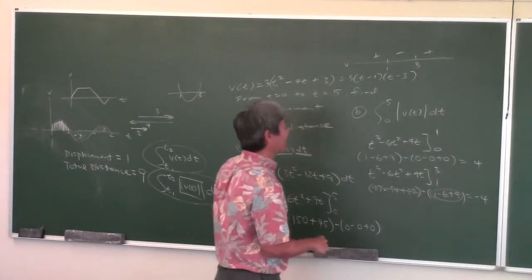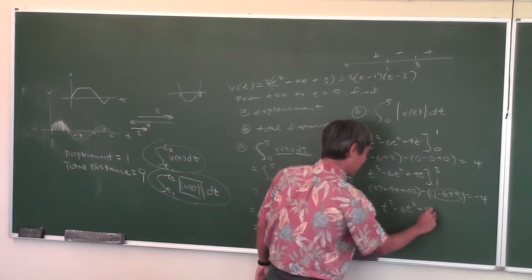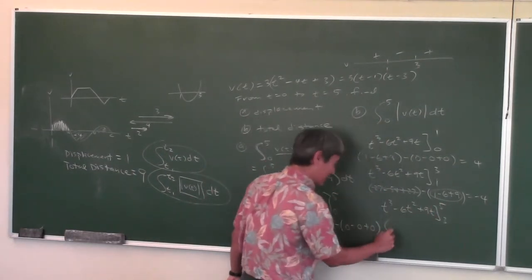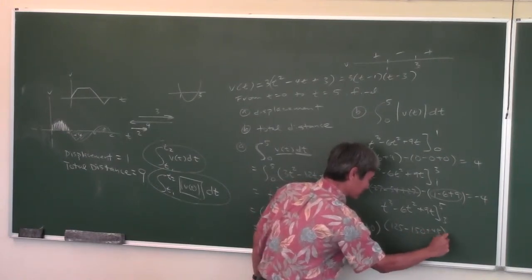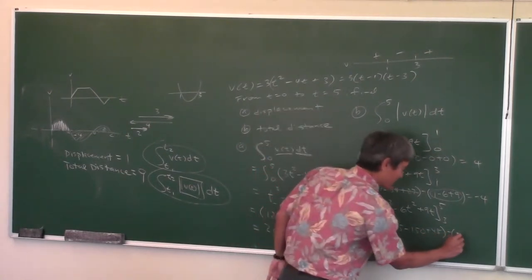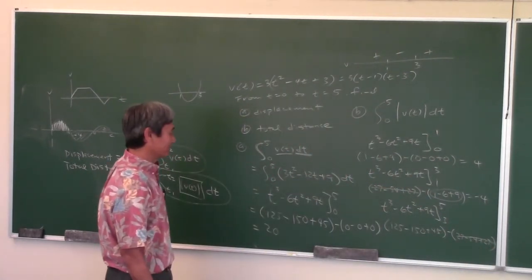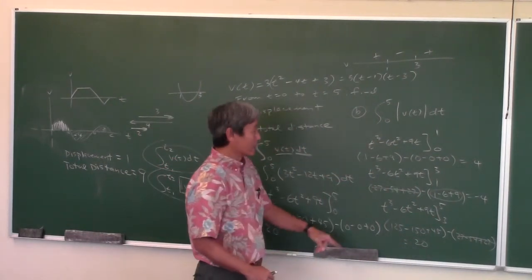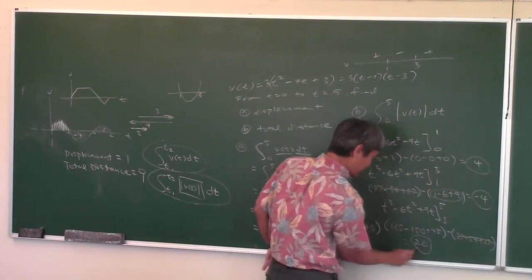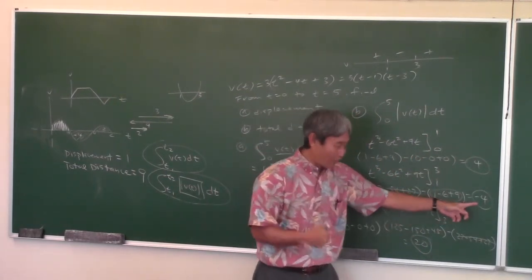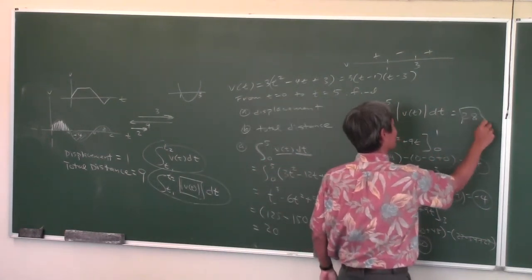Third integral: from 3 to 5. Plug in 5: 125 − 150 + 45 = 20. Plugging in 3 gives 0. So 20 − 0 = 20. From 3 to 5, the particle traveled 20 units to the right. So the three results are: +4, −4, +20. Total distance traveled = |4| + |−4| + |20| = 28 units.